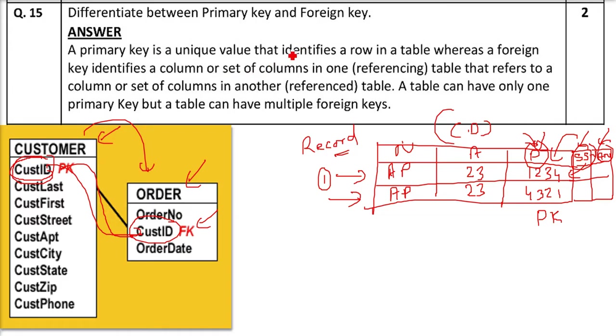In another table, if some table has a primary key and it is found in another table, that will be called as a foreign key. So a primary key is a unique value that identifies a row in a table, whereas a foreign key identifies the column or set of columns in one table, that is referencing table, that refers to a column or set of columns in another table. So there are two tables involved. One has a primary key and other is saying that it is a foreign key.